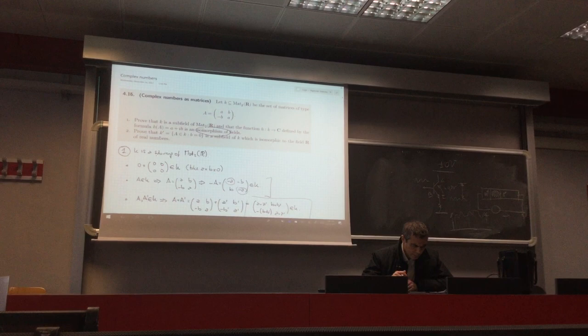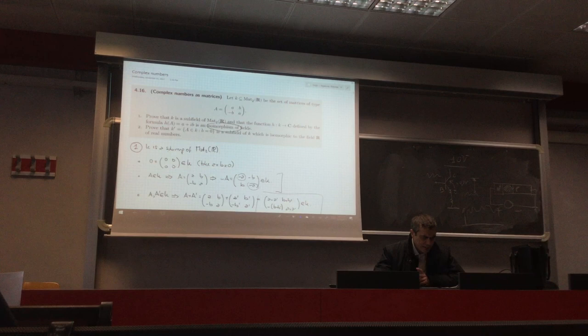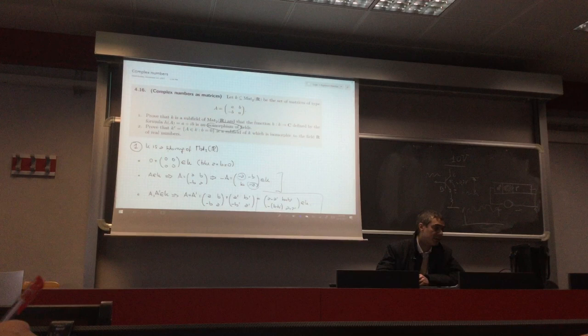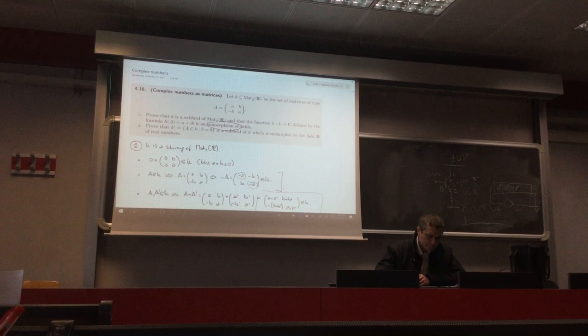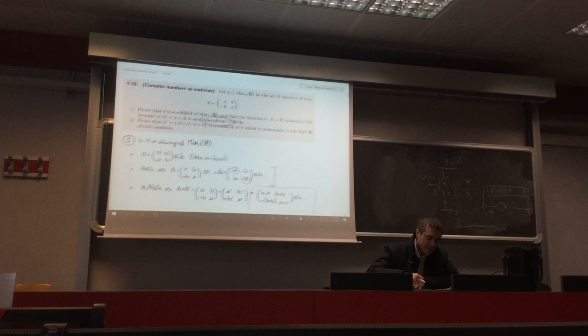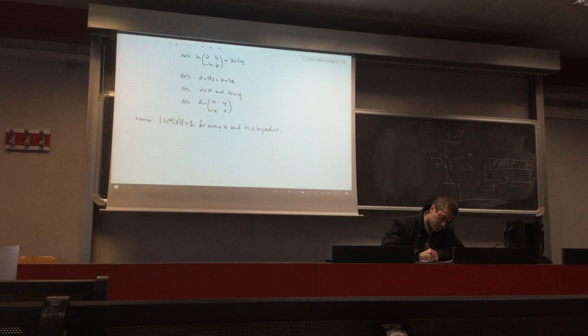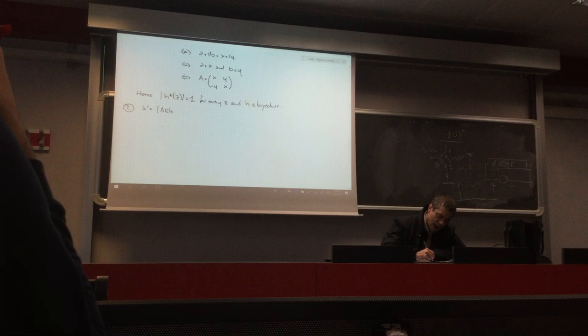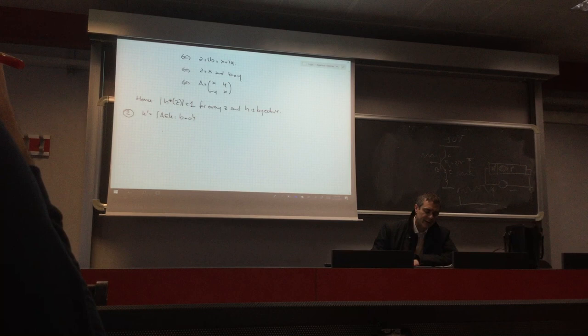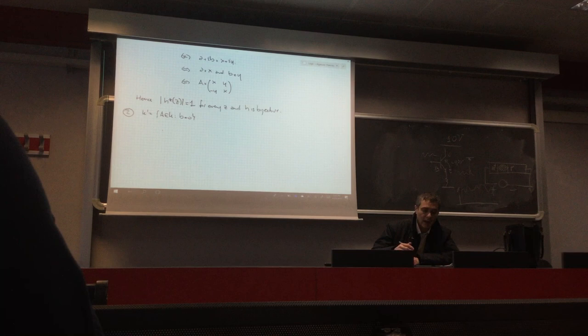The second part asks to prove that K', the elements of K with B equal to zero, is a subfield isomorphic to the field of real numbers. K' is the set of matrices from K such that B equals zero. We prove first that it is a subfield of K, then that it is isomorphic to the reals.